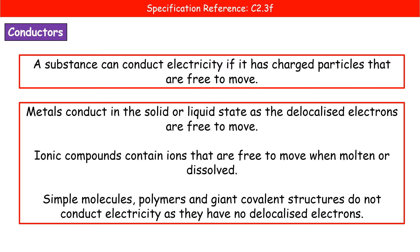The third property is conduction. If we think about conduction of electricity, in order to conduct electricity a substance has to have one of two things able to move: either delocalized electrons, because they are a charged particle, or ions. We've got to have some form of charged particle that is free to move. If you don't have charged particles that are free to move, it cannot conduct electricity.